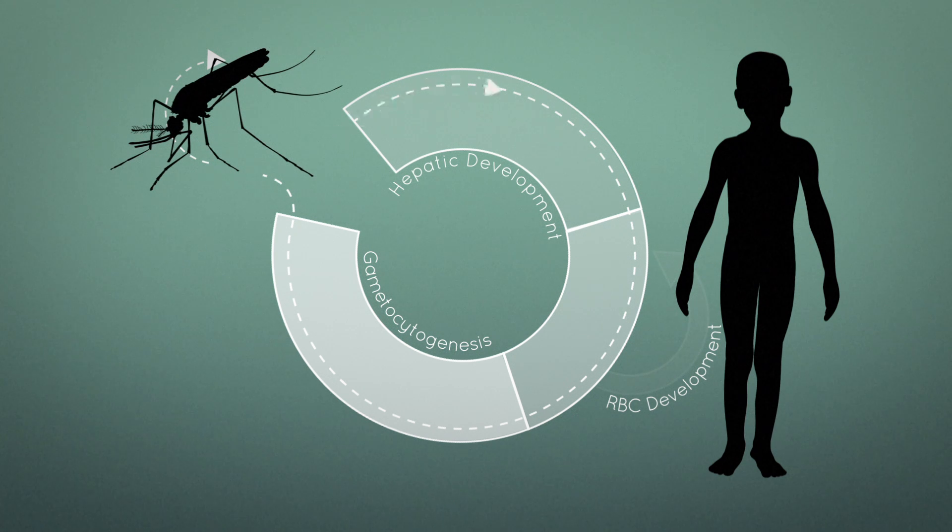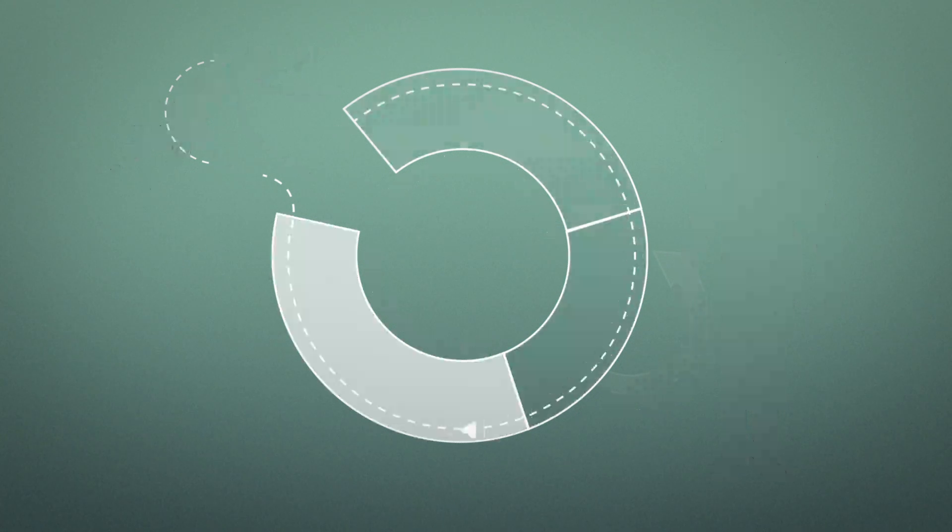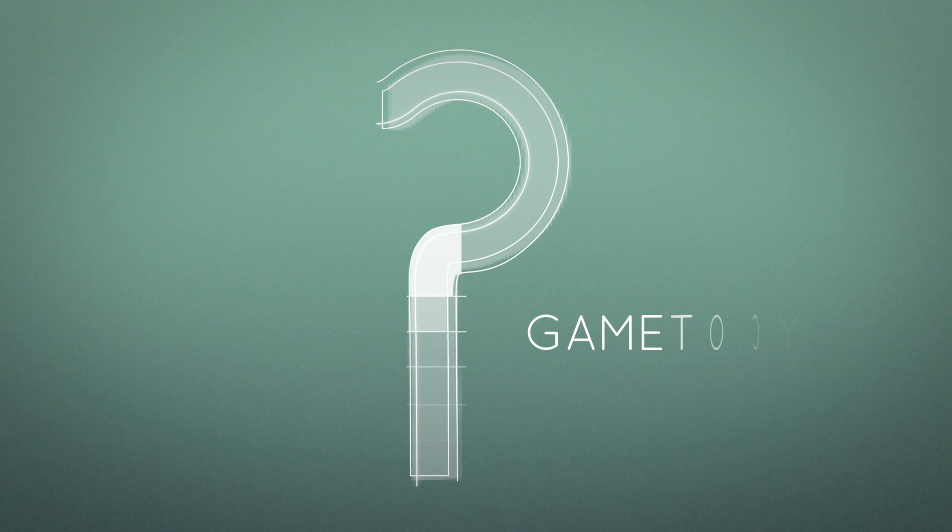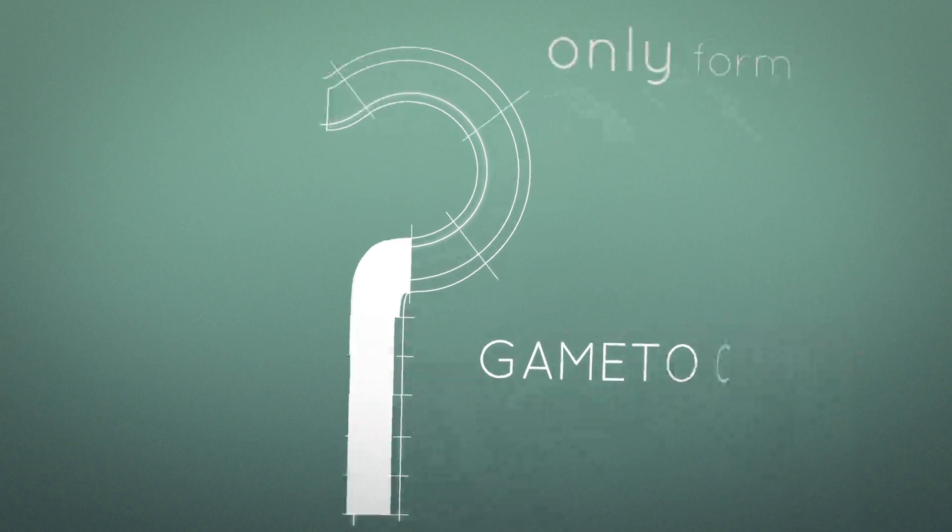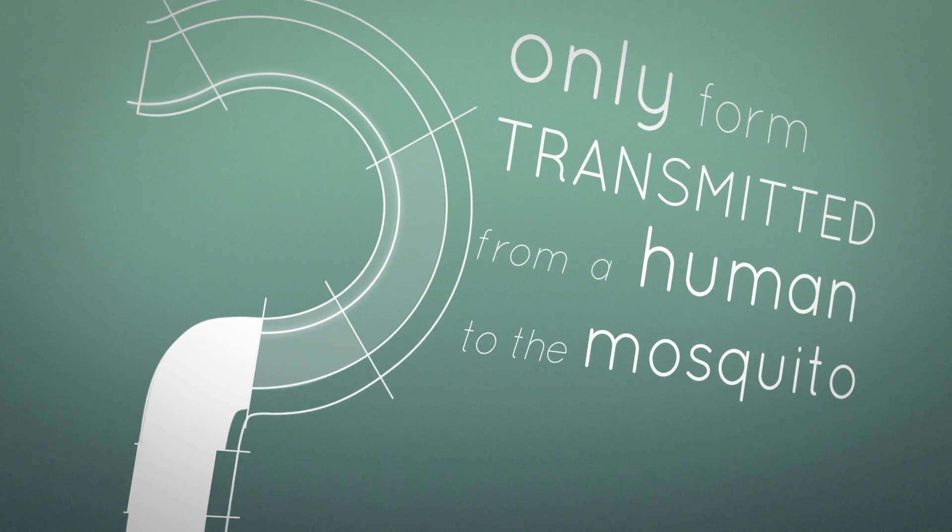Although Plasmodium transmission is clearly recognized as an important step in the parasite life cycle, very little is known about the sexual or gametocyte stages, which are the only parasite forms that can be transmitted from a human to the mosquito.